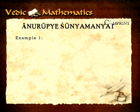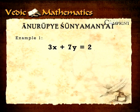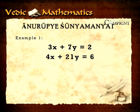For example: 3x plus 7y equals 2, and 4x plus 21y equals 6. Observe that the y coefficients are in the ratio 7 is to 21, which is 1 is to 3, same as the ratio of independent terms, that is 2 is to 6, which is 1 is to 3. Hence the other variable x.